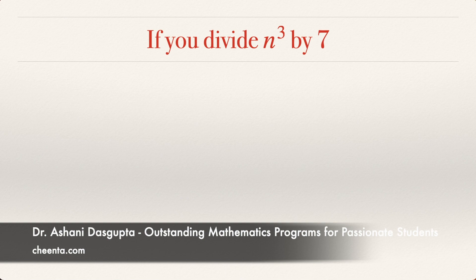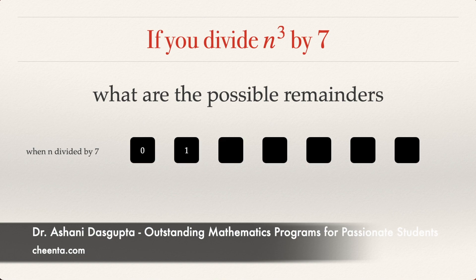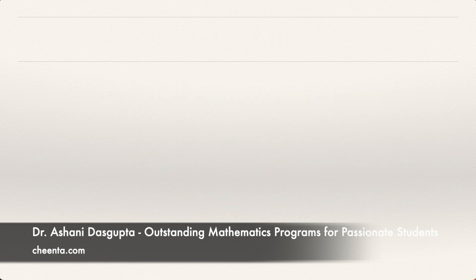Now let's see what happens if we divide N cubed by 7. Earlier we found the remainders when dividing N by 7 are 0, 1, 2, 3, 4, 5, 6. When we cube N, my claim is that the remainders become 0, 1, 1, 6, 1, 6, 6. The key observation is: when you divide a cube by 7, there are only three types of remainders you can get — 0, 1, or 6. That greatly reduces the number of possibilities, and we will use that fact in our problem.